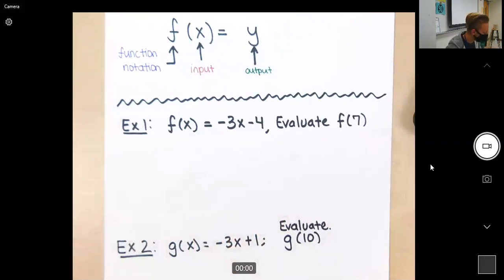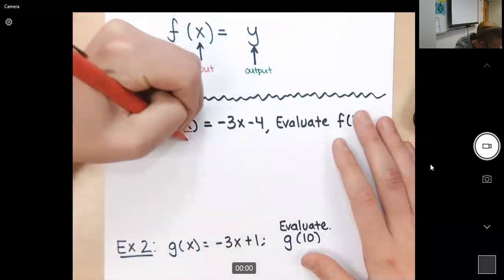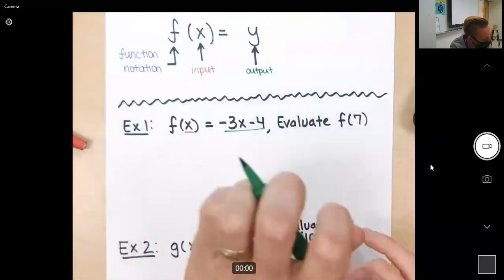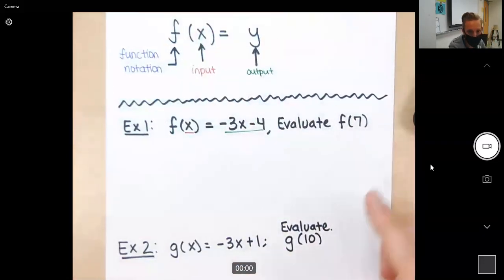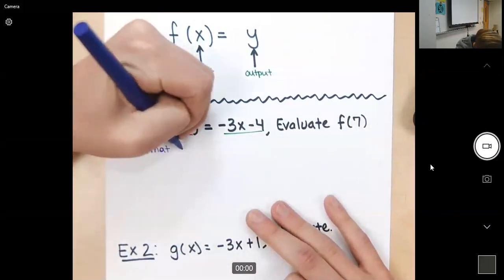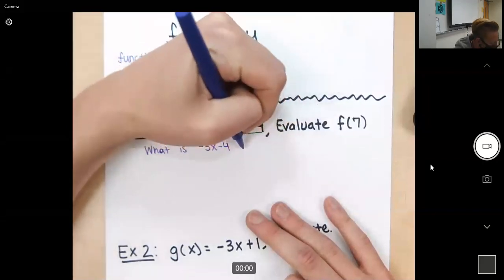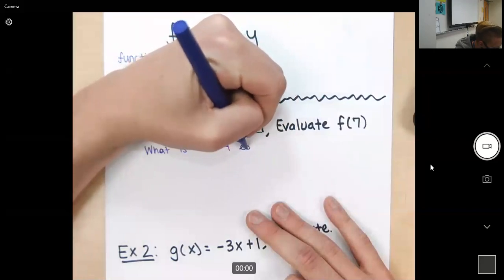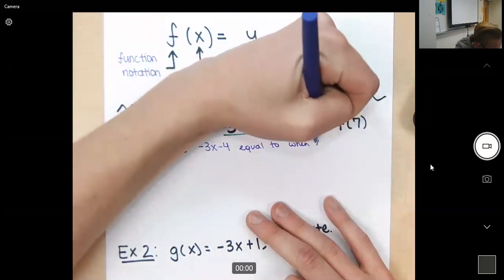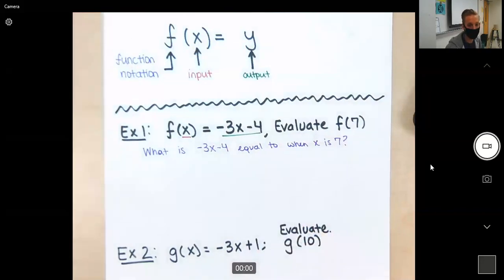So all that's happening here is notice currently that x is my input and my output is going to be negative 3x minus 4. What this is asking me to do, the question here, when it says evaluate f(7), it says: what is negative 3x minus 4 equal to when x is 7? That's what it means when it says evaluate f(7).